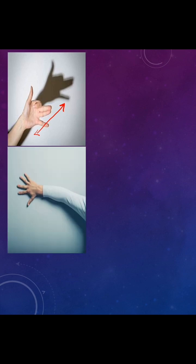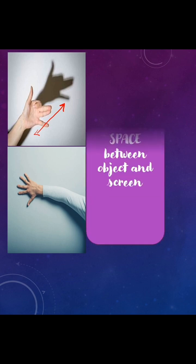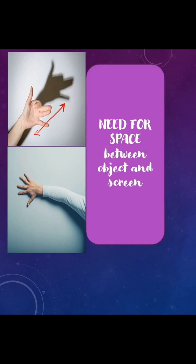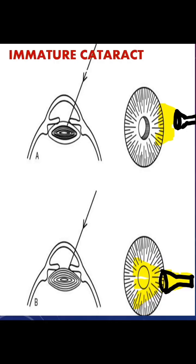However, if you place your hand exactly onto the wall, there is no space between the hand and the wall and therefore there will be no shadow. In a mature cataract, there will be some sort of clear cortex between the opacified lens and the iris.